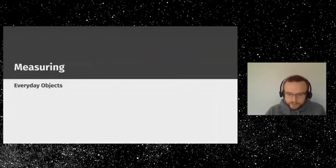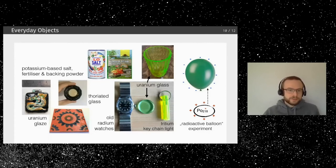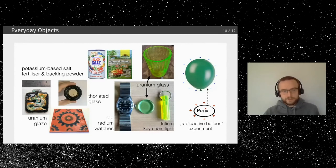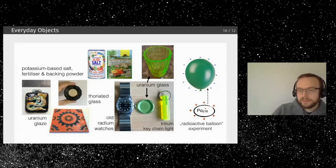There are many interesting objects to measure: potassium salt, potassium-based fertilizer, baking powder, uranium glass (easily found at flea markets), old radium watches, uranium-glazed kitchen tiles, and thoriated glass with its distinctive brownish color caused by radiation exposure. A nice experiment is the radioactive balloon: charge a balloon electrostatically, leave it for 15 minutes in a normal room, and it will catch polonium from the air — you basically get a radioactive balloon.